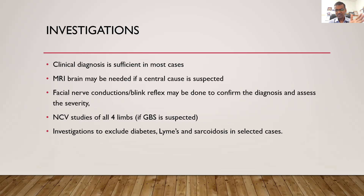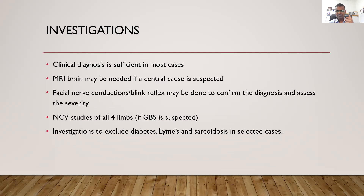Once we have suspected facial paralysis, facial palsy is a clinical diagnosis — when you see a person with weakened facial muscles, it means Bell's Palsy. But in some cases we may have to do brain scanning if we think the lesion could be in the brain. MRI may be useful to demonstrate inflammation and swelling of the facial nerve. To assess the extent of involvement, we can do facial nerve conduction studies or blink reflex. In Guillain-Barré syndrome, where there is also weakness of arms and legs, nerve conduction studies confirm the diagnosis. In selected cases we may also investigate for diabetes, Lyme's disease, and sarcoidosis.